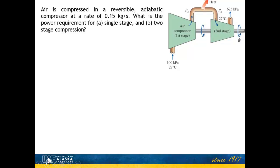So here's the example problem we're going to look at. We have air, and it's compressed in a reversible adiabatic compressor at a rate of 0.15 kilograms per second. And we're asked to find two things: What is the power requirement if this is done in a single stage, and what is the power requirement if it's done with two-stage compression?